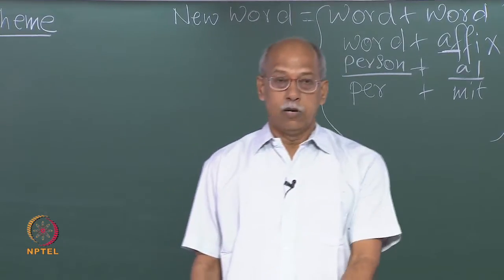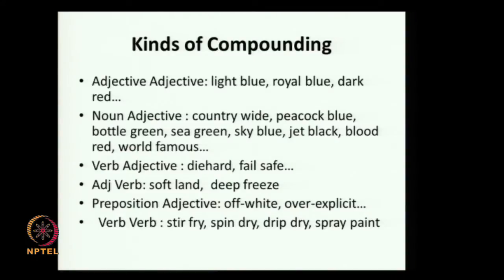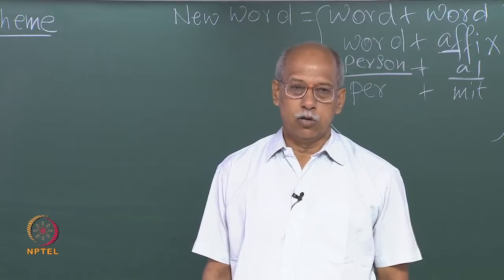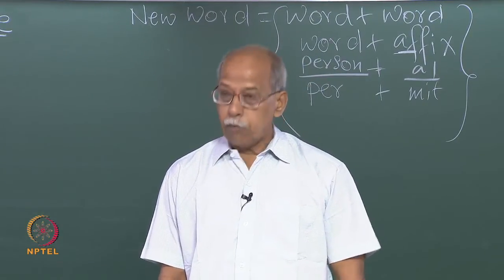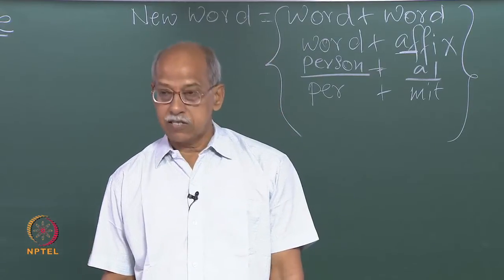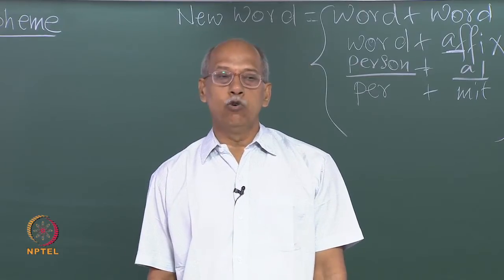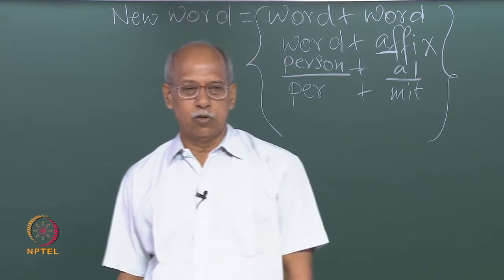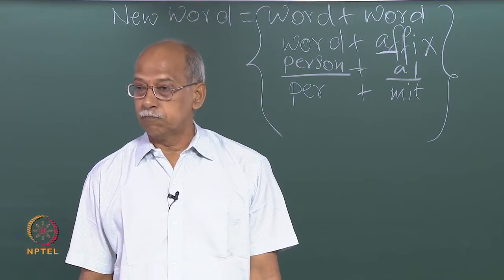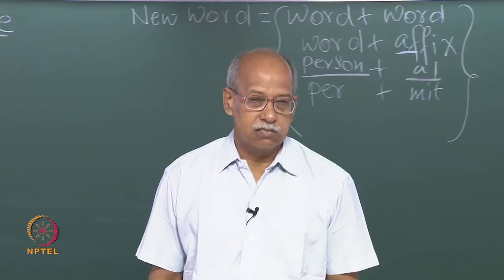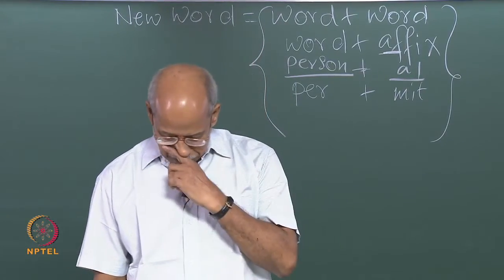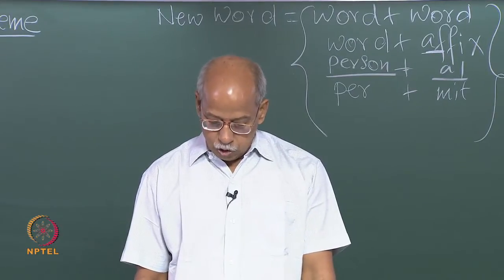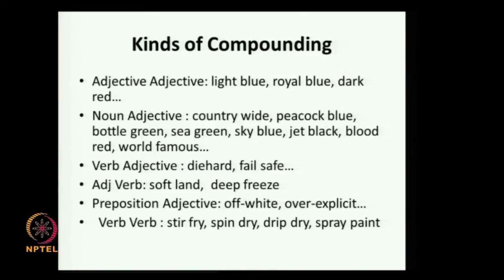Similarly you can have noun plus adjective — look at 'countrywide'. 'Peacock blue' is noun plus adjective. In Hindi we call it 'mayur pankhi', in Maithili 'mazur pankhi'. We have color prejudices — peacock color, parrot color. 'Bottle green', 'sea green', 'sky blue', 'jet black', 'blood red' are all examples of noun plus adjective compounds.